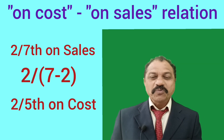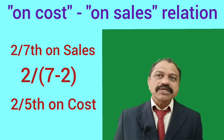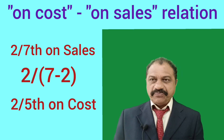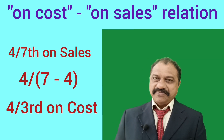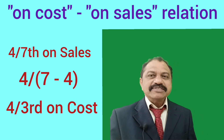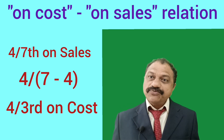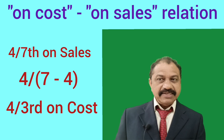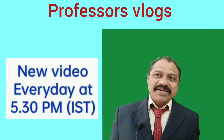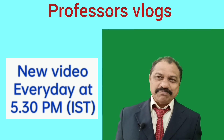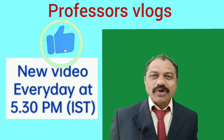Example 2: 2/7 on sales equals 2 by (7−2) on cost, that is 2/5 on cost. Example 3: 4/7 on sales equals 4 by (7−4) on cost, that is 4/3 on cost. I conclude — I hope that all of you enjoyed this presentation. Subscribe now and get new insights. Thank you for watching.